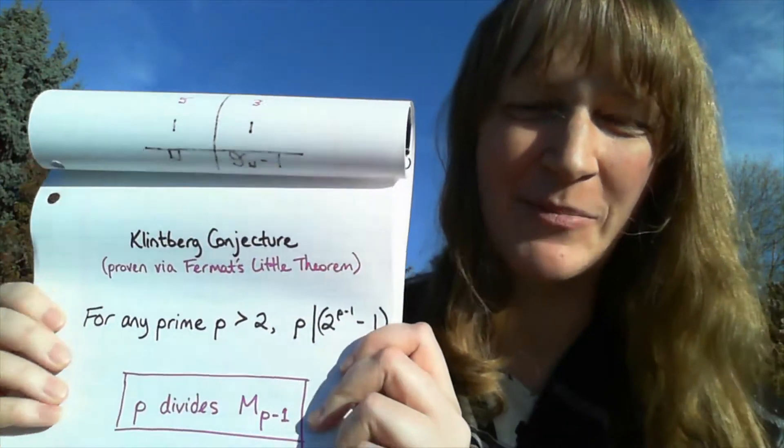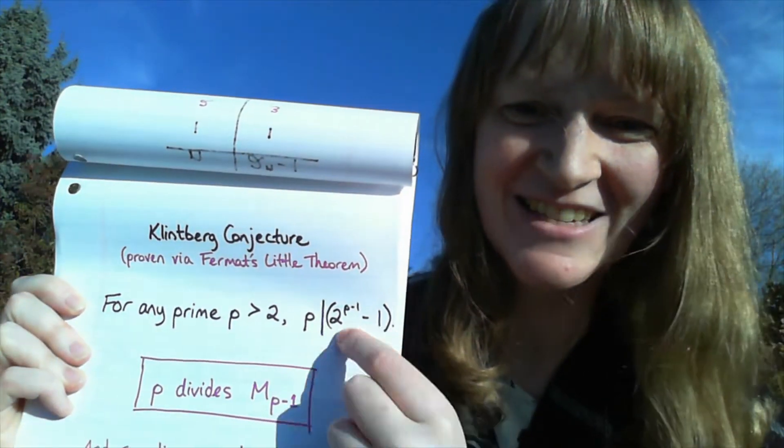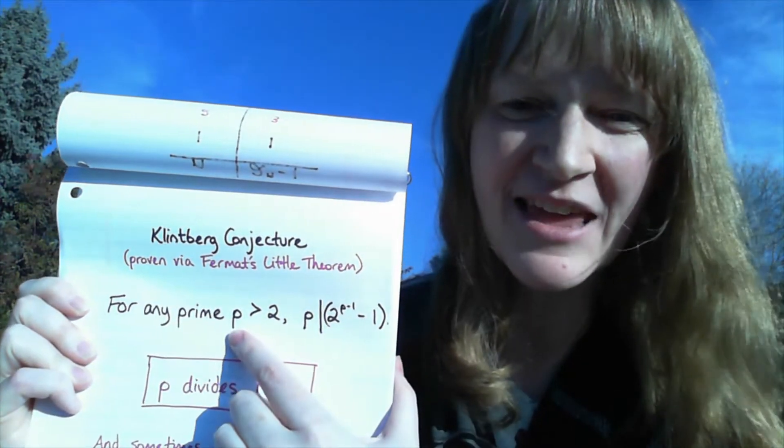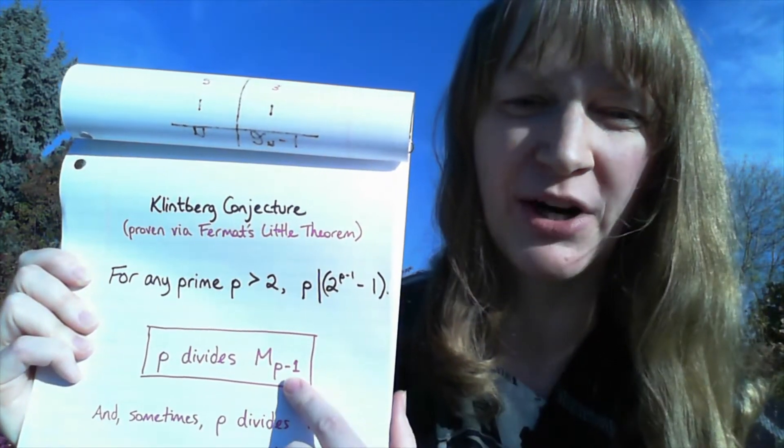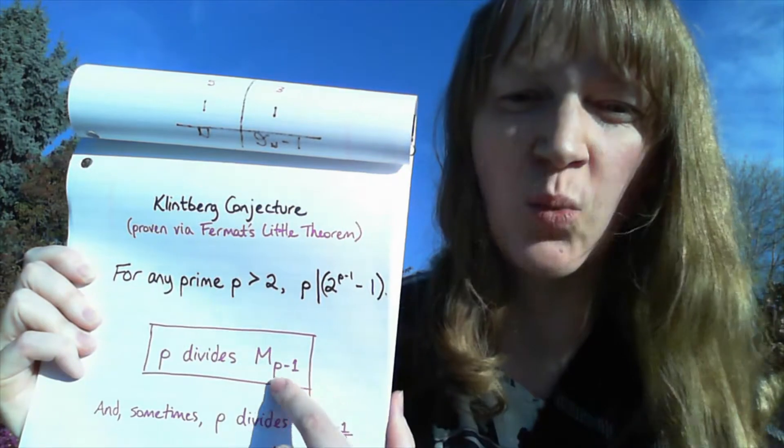Okay, so we're going to look at composite Mersenne numbers and what makes them composite. So last week we took a look at that Clintburg conjecture that keeps coming up again and again that says for any prime p that is not 2, p divides the Mersenne number where the exponent is one less than the prime.